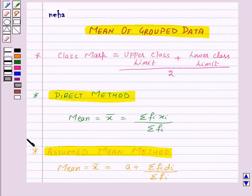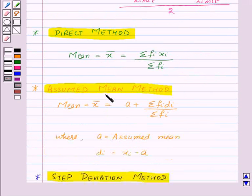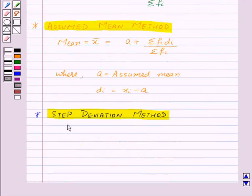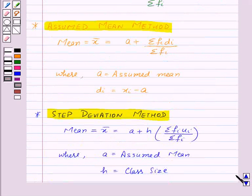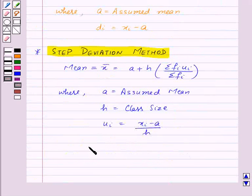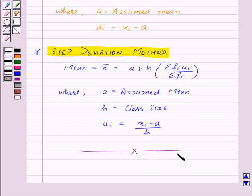So in this session we have learnt the direct method, assumed mean method, and step deviation method to find out mean. With this we finish the session. Hope you must have understood all the methods. Goodbye, take care and have a nice day.